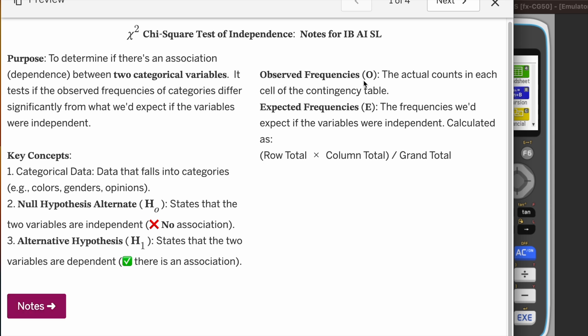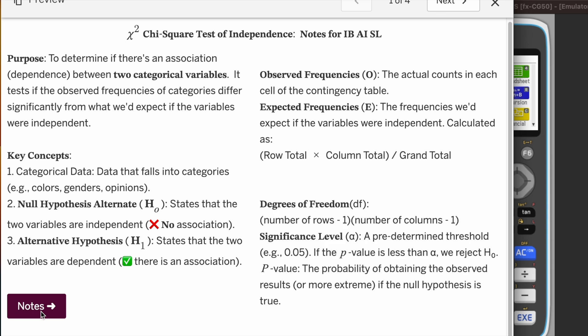The observed frequencies come from the given table or data. Expected frequencies we have to calculate using this formula: row total times column total divided by the grand total.